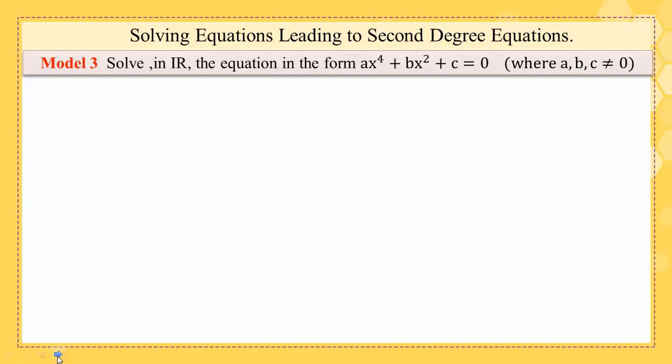Here is the example: solve in R, x^4 - 3x^2 - 4 = 0. The solution: we will make a clever trick, which is to replace x^2 by t.